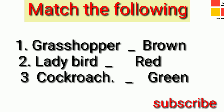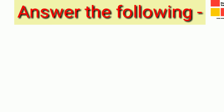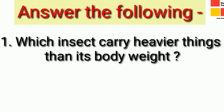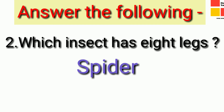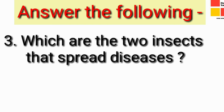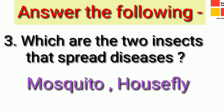Our next exercise is match the following. You have to match the insects with their colors. First one is grasshopper, second one is ladybird, and third one is cockroach. The colors given are brown, red, and green — match them correctly. Next is answer the following. First: which insect carries heavier things than its body weight? Yes, it is ant. Next: which insect has eight legs? Yes, it is spider. Third: which are the two insects that spread diseases? Yes, they are mosquito and housefly.